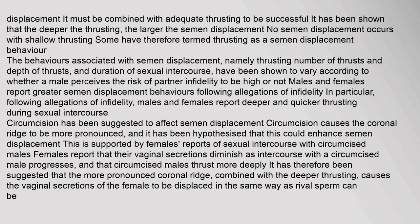The behaviors associated with semen displacement — namely thrusting, number of thrusts, depth of thrusts, and duration of sexual intercourse — have been shown to vary according to whether a male perceives the risk of partner infidelity to be high. Males and females report greater semen displacement behaviors following allegations of infidelity, including deeper and quicker thrusting. Circumcision has been suggested to affect semen displacement, as it causes the coronal ridge to be more pronounced, and females report diminishing vaginal secretions and deeper thrusting with circumcised males.